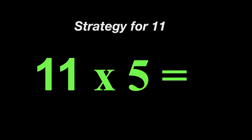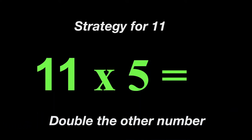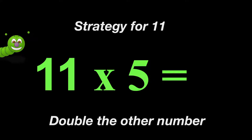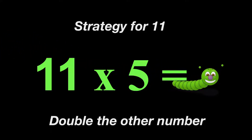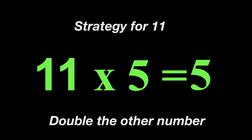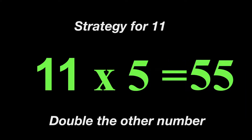Now our strategy for 11 is also really easy — it is just double the other number. So for example, 11 times 5, the other number is 5. So we are going to take our 5 and then we are going to double it, so 5 doubled would be 55. In other words, 11 times 5 is 55.